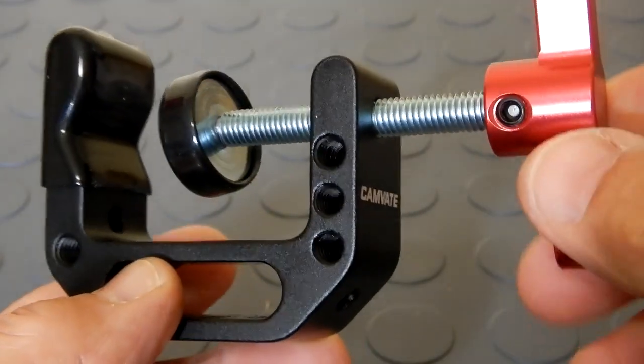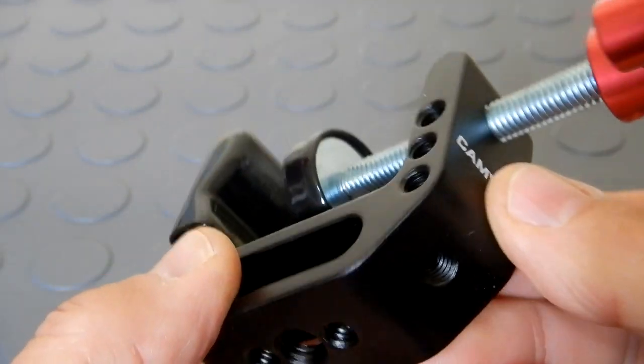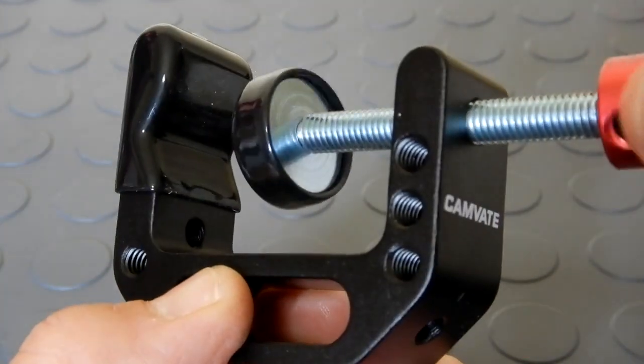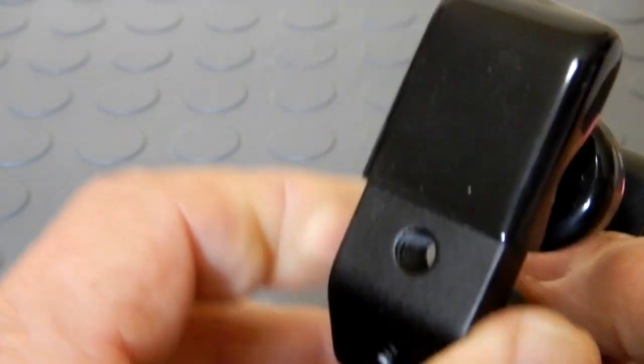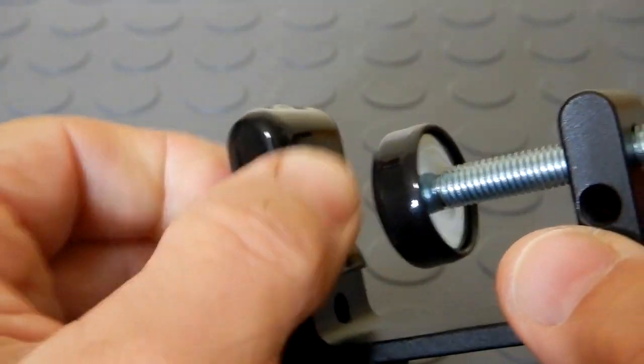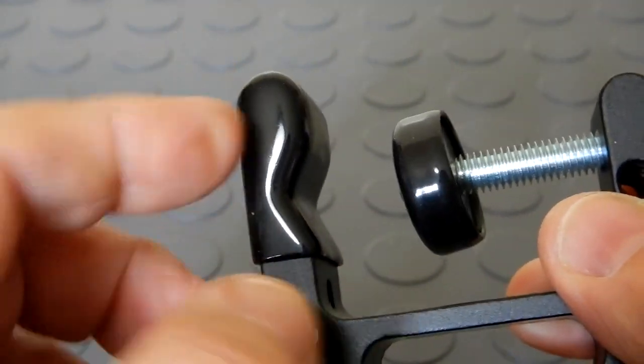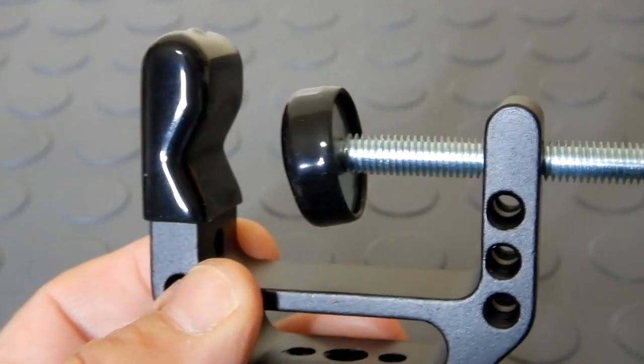So the aluminum consists of the handle and this clamp body. Your steel is the threaded rod and the pad, the back of the pad. And then your plastic, PVC, whatever would be the cushioning that they have on the clamp head and on the clamp pad there itself.